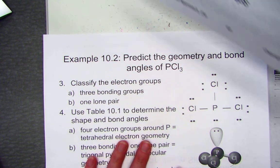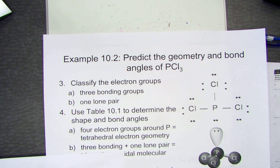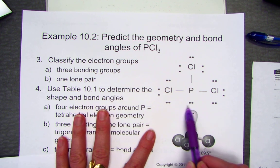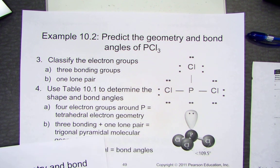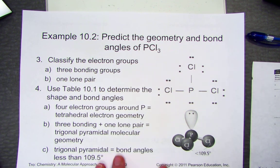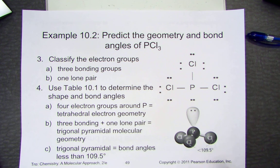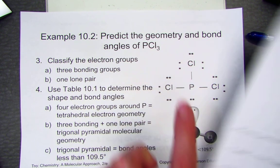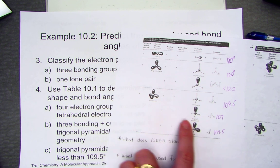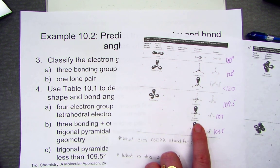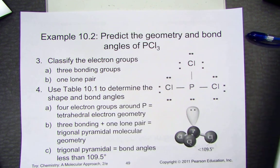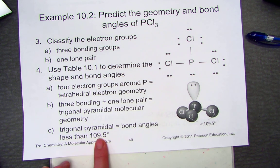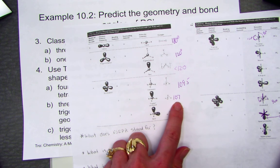Step three: Classify the electron groups. Are they bonded or are they non-bonded? For phosphorus trichloride, I can clearly see three bonded and one non-bonded pair of electrons. Once I've classified three bonded and one non-bonded, I simply use my VSEPR chart. Four electron domains, so the electron domain geometry is tetrahedral. Of the four, three are bonded and one is non-bonded. We're going to classify this as trigonal pyramidal with a bond angle of 107 degrees.